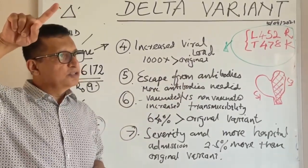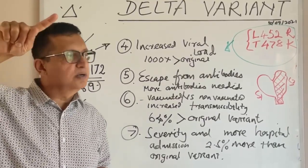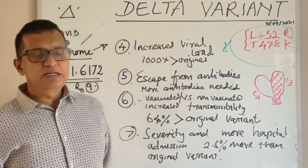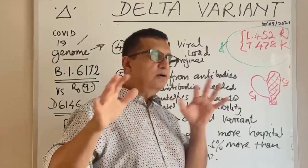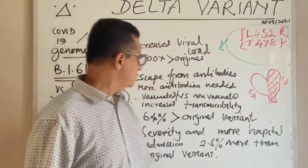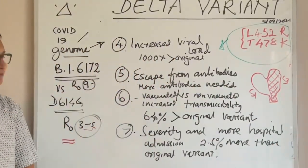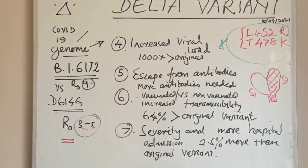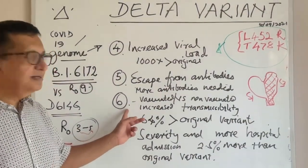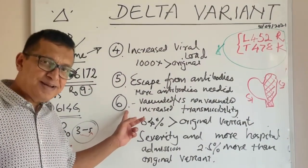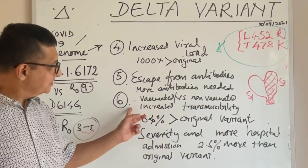According to one calculation, if one unit of antibody suffices for the original Wuhan strain, the delta variant needs six times that amount. That is the fifth reason.